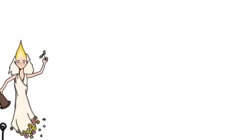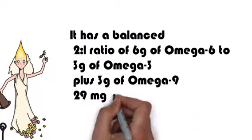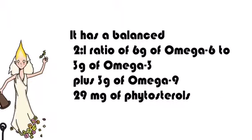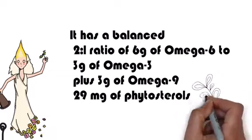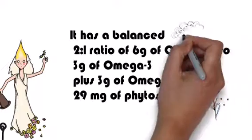Every tablespoon features a balanced 2:1 ratio of 6g of Omega-6 to 3g of Omega-3, plus 3g of Omega-9, and 29mg of phytosterols.